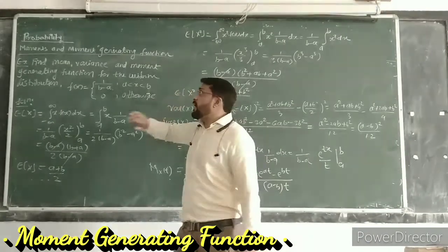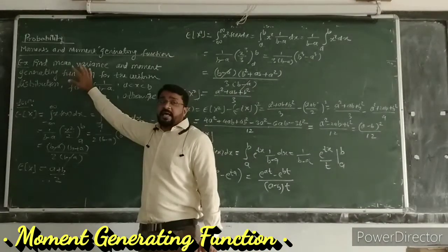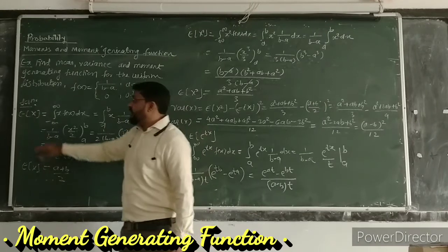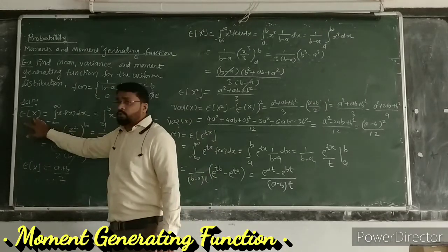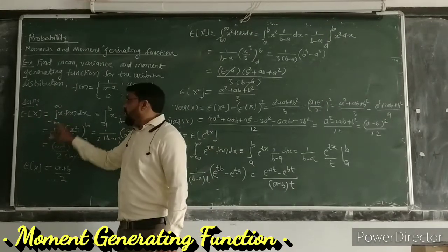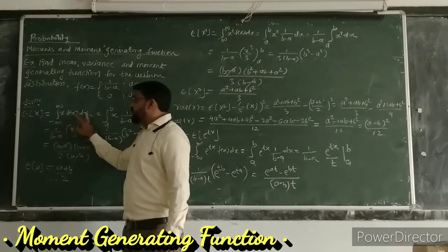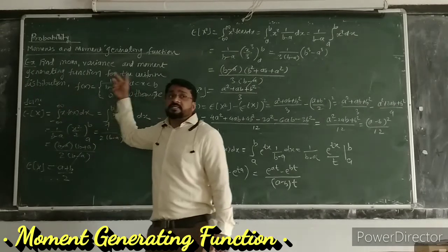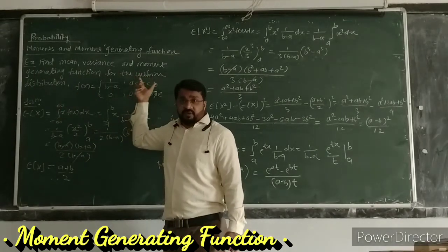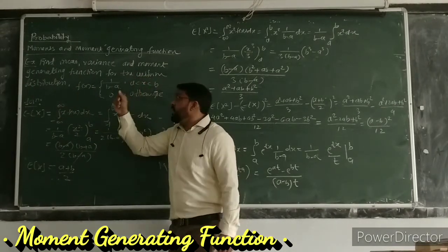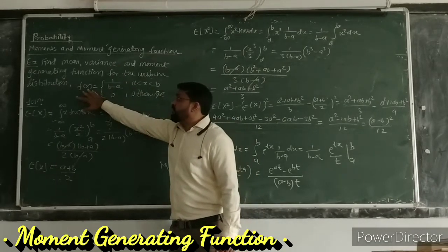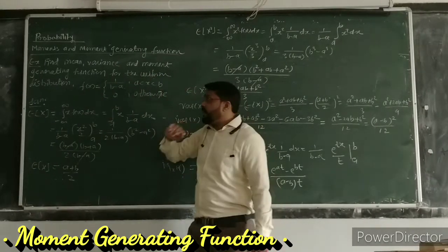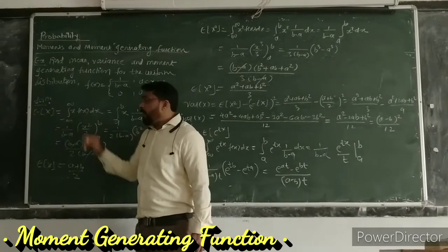The mean value is called the expected value of the random variable x. It is defined as E(x) equals the integration of x·f(x) from minus infinity to plus infinity. This is an example of a continuous random variable because the distribution function is defined over an interval, so we use integration.